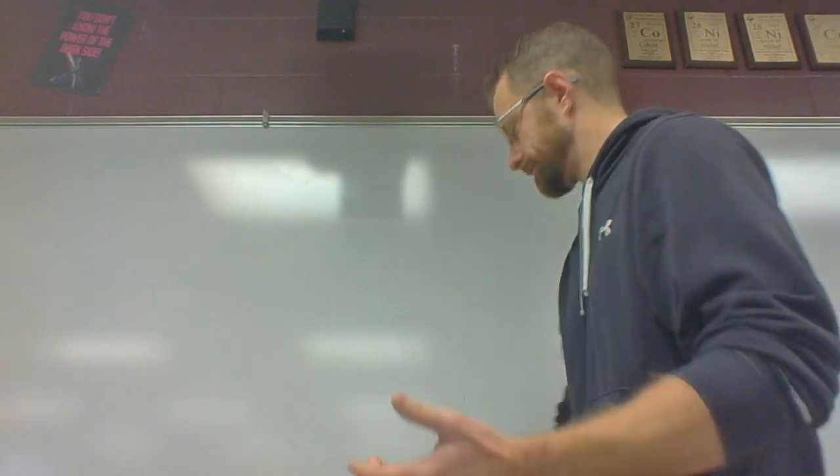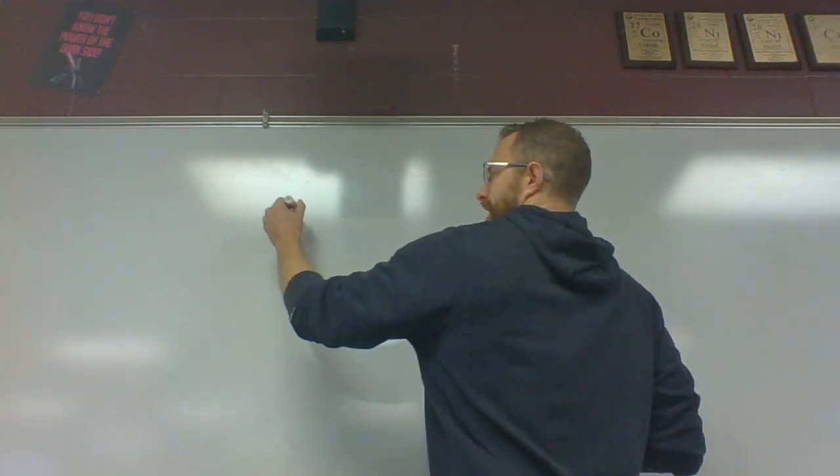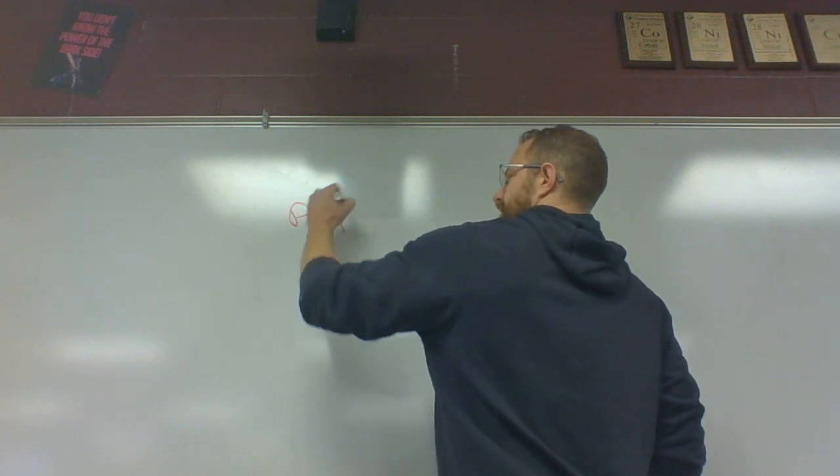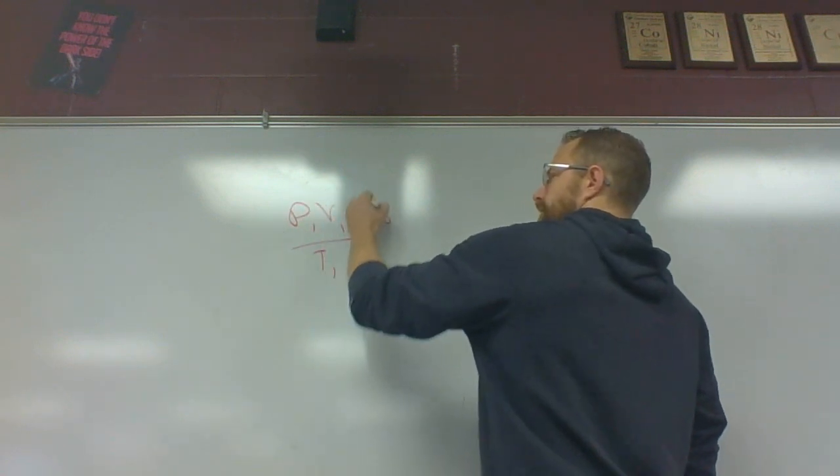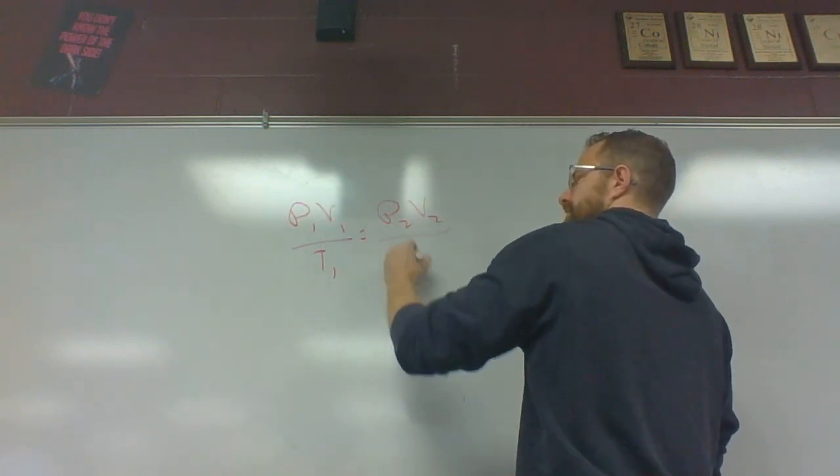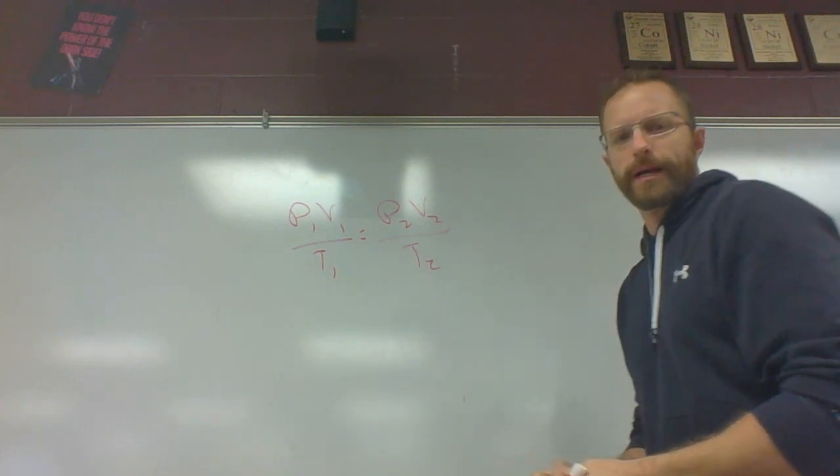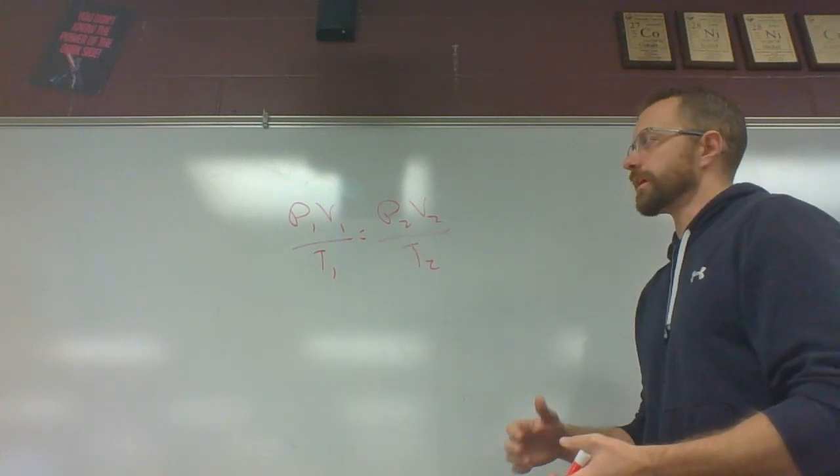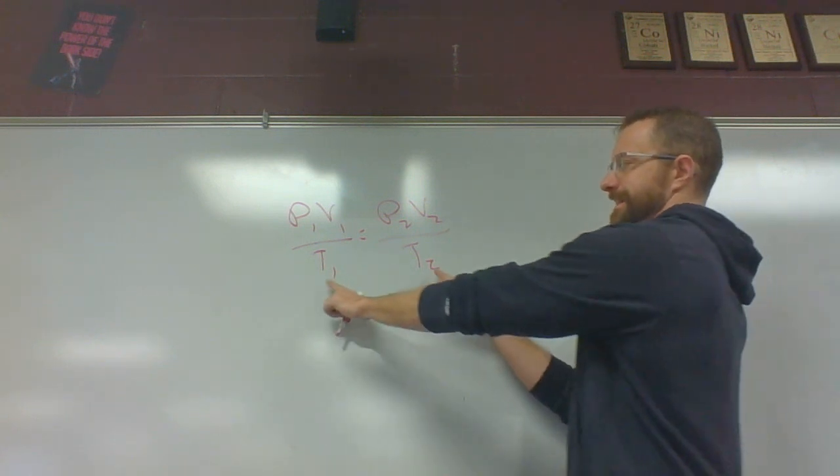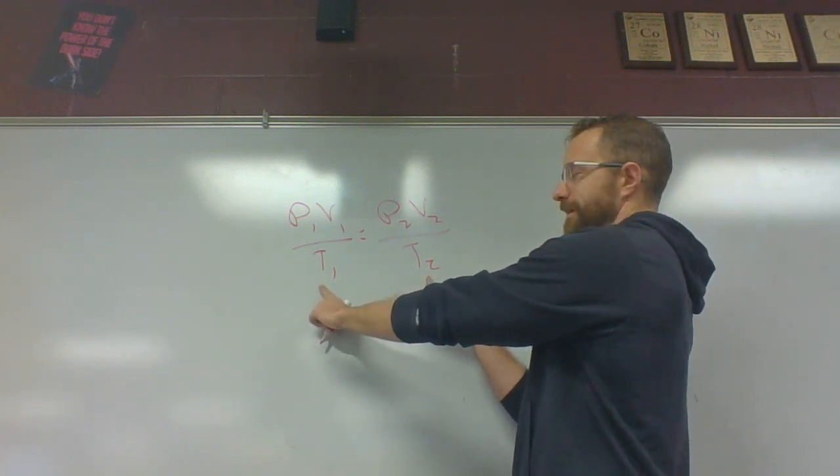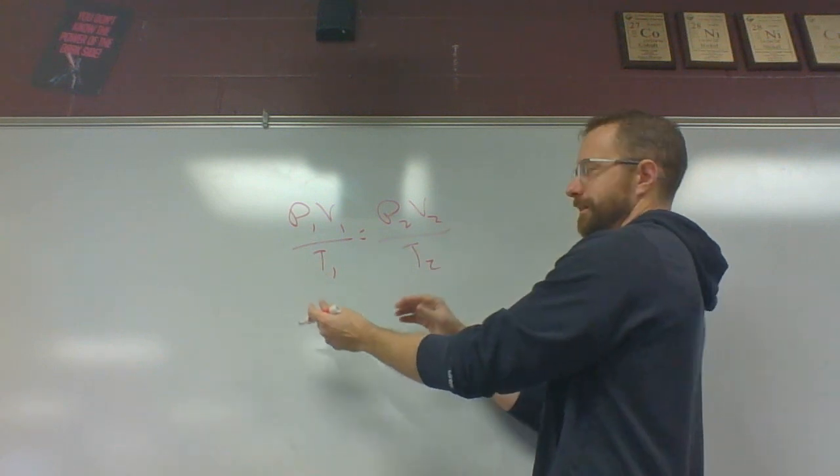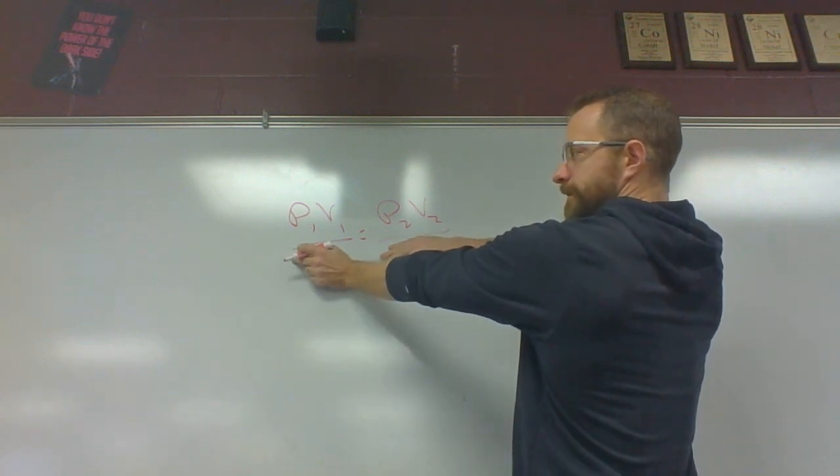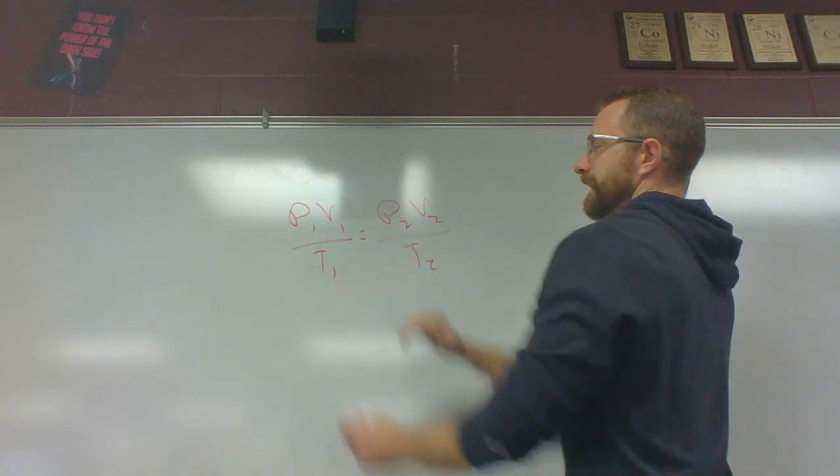So combined gas law, we're basically taking the Boyle's law stuff and the Charles law stuff and smushing it together. The combined gas law is P1 V1 over T1 equals P2 V2 over T2. It's all three of those things changing. In Boyle's law, we have to hold temperature constant. Well, if you hold temperature constant, it's the same in both spots. And if I divide both sides by two, it doesn't really change anything. So I can ignore that temperature, and that turns into Boyle's law.